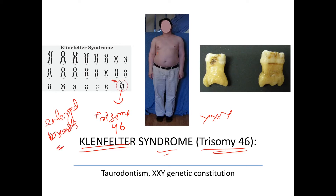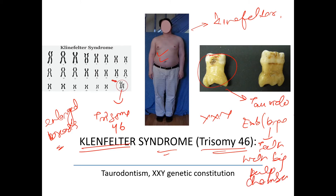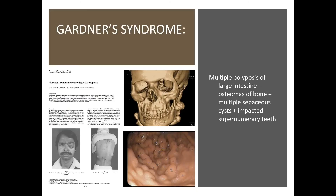Klinefelter syndrome also features taurodontism. Taurodontism means large teeth with a very big pulp chamber — the pulp chamber is very enlarged. You can see this tooth has a very big pulp chamber, and the teeth are also considerably very large.